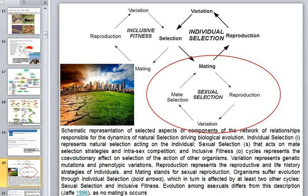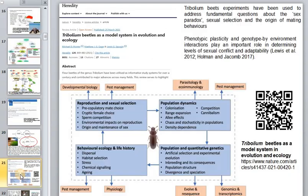There must be major corresponding advantages to compensate for this and explain why sexual reproduction is so widespread in animals and plants. The most popular explanation is that advantages occur when the environment is changing rapidly. Experiments with bits have shown that in conditions of rapidly changing environmental conditions, it is sexual reproduction that saves the population.